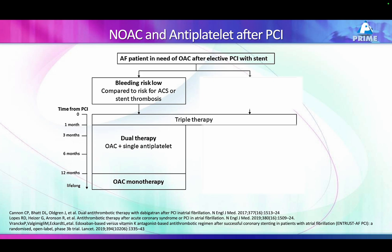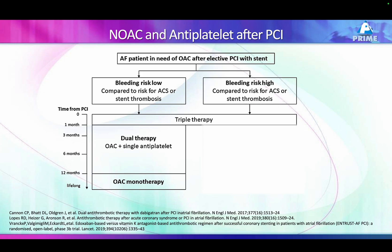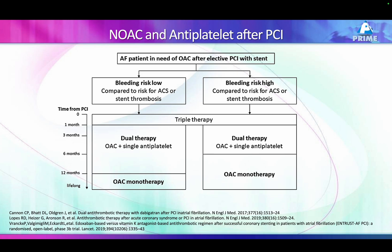So the regimen is: clopidogrel, aspirin, and NOAC for one month, then dual therapy — NOAC and aspirin — for one year. Thereafter, when the patient is stabilized and goes back to chronic stable angina category, only NOAC with no aspirin. If bleeding risk is high, you can shorten triple therapy to one or two weeks, then dual therapy for three to six months depending on risk, then single NOAC thereafter.